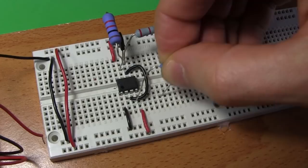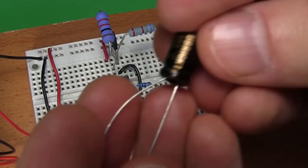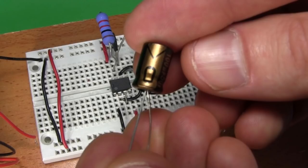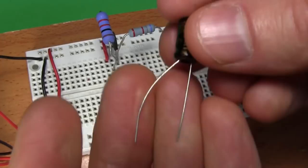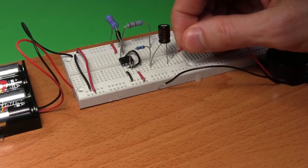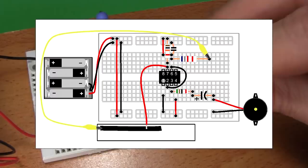Now for the 100 microfarad electrolytic capacitor. Notice that it has a stripe on one side with a minus sign on it, or something like that. That side is negative, and the other side is positive. Notice also that the positive leg is longer than the negative leg. Plug the positive leg in this hole, and the negative leg in this hole. That connects the positive leg to the 51 ohm resistor.